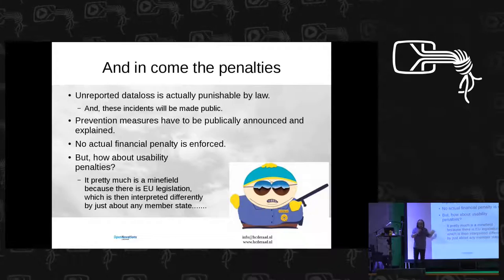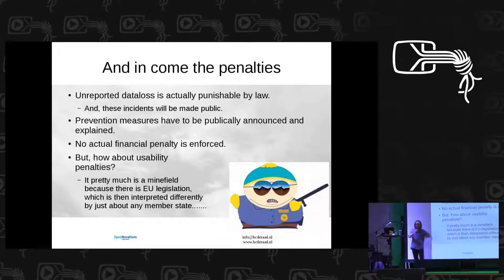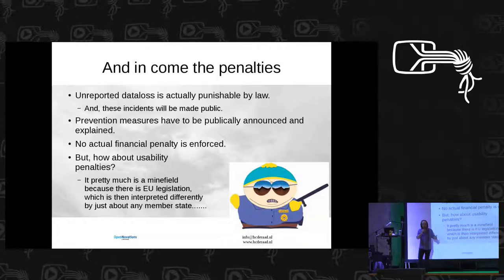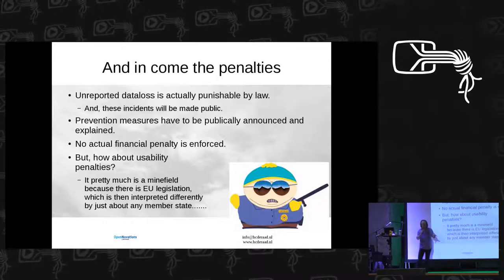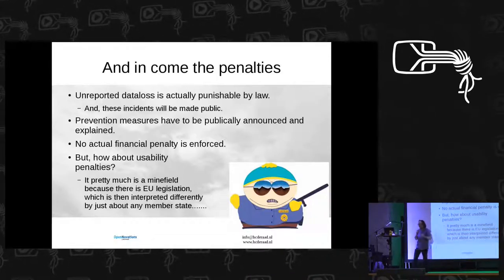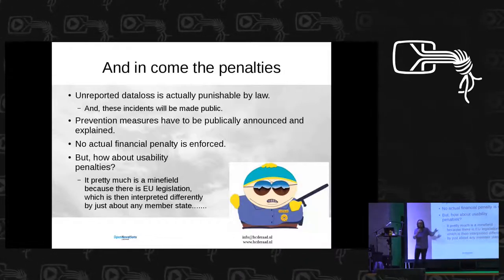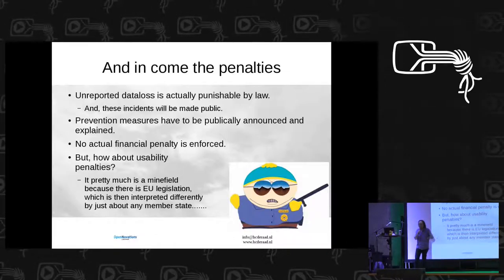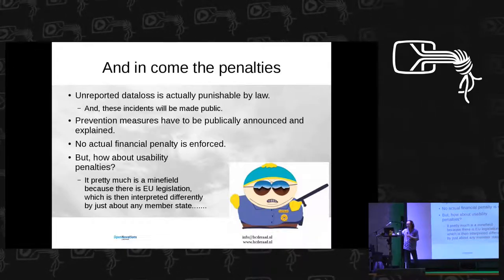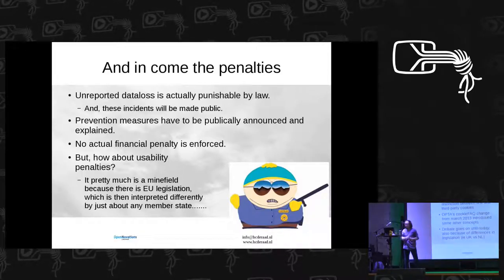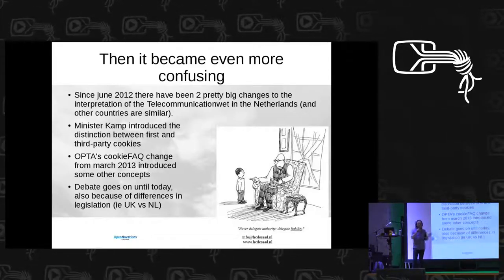We've even tried to create a system of penalties — repercussions for parties not involved. There was, however, a little bit of a pitfall: the internet tends not to stop at the Dutch border. That may come as a surprise, at least to the politicians, but the internet appears to be a global thing. It's quite hard to actually penalize some kind of Russian or Chinese e-commerce website if that government doesn't recognize your law.